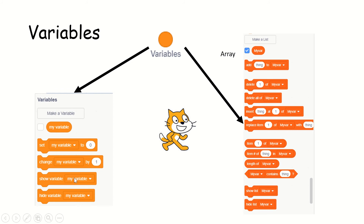Show variable — it is like printing. When you have show, it is like printing. Hide variable — you can also hide that. You can add a thing to my variable, delete one item of my variable — this is all array. Delete all of my variable. You can delete, you can add, you can insert, you can replace — all these things can be done. This is called array: a series of values available one after another.